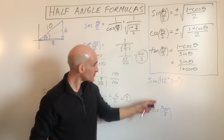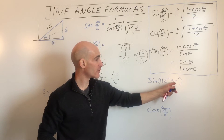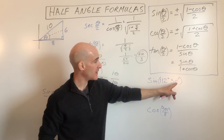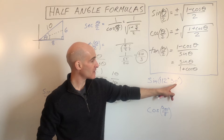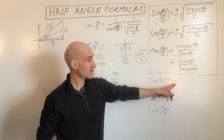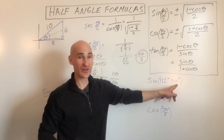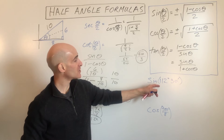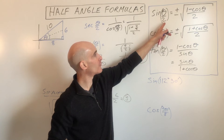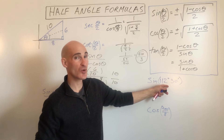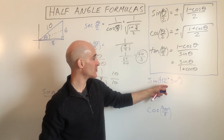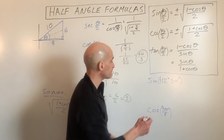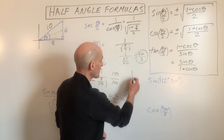Next example: find the sine of 112 degrees 30 minutes. Remember there are 60 minutes in a degree, so this is really 112.5 degrees — a half degree. This is not on the unit circle, so we use the sine half-angle formula. We recognize that 112.5 is half of 225 degrees, which is a value we are familiar with on the unit circle.